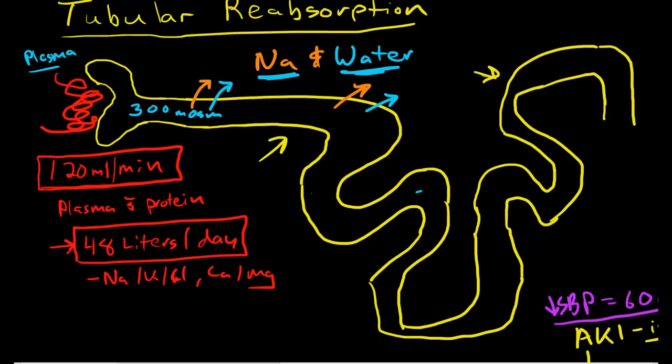Other things that are very actively absorbed in the proximal tubules include glucose. And proteins are absorbed by pinocytosis. Now, glucose and proteins are absorbed so quickly in the proximal convoluted tubule that in normal kidneys, there is no glucose or proteins by the time you get to the loop of Henle. So these are completely reabsorbed only in the proximal tubule.